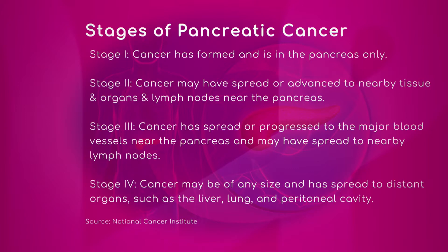Stage three involves tumors that are growing outside of the pancreas and are locally invasive — locally advanced. The tumor is going outside the confinements of the pancreas and involving nearby structures, which deems the patient unresectable, meaning they can't have an operation. It's more about the vessels sitting behind the pancreas than lymph nodes. It's a locally advanced process, but the disease hasn't spread outside of the area where the pancreas is.